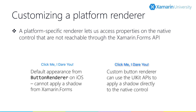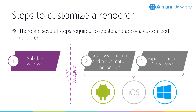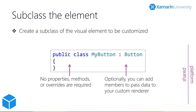In order to do the customization, we need to create a new renderer that extends the existing renderer — in this case, a button renderer. There are several steps: first, subclass the Xamarin Forms element to create a unique element; second, subclass the platform-specific renderer and adjust properties on the native control; and third, export the renderer so that the custom renderer is used for our derived element. Steps two and three are platform-specific and need to be repeated for each platform. We start by subclassing the Xamarin Forms element in our shared code — no additional customization is needed, and we can add new properties if we choose, but often all we need is the derived class.